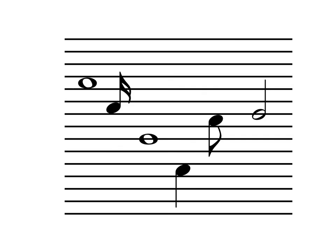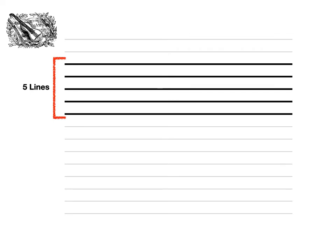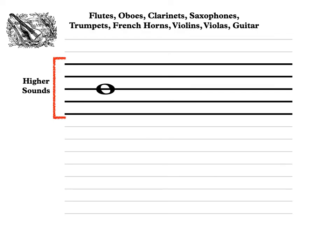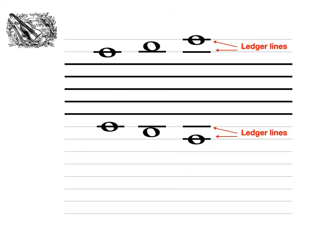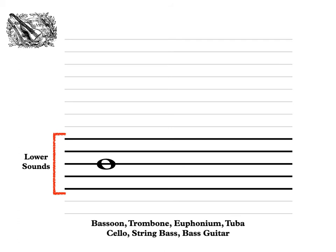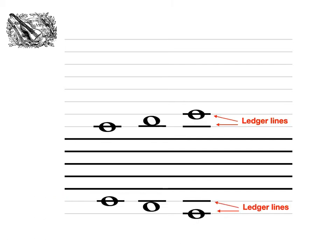But if we used all of the lines at one time, it would be just too confusing for the musicians. So we're going to reduce them down to just five visible lines at a time. If we needed higher sounds, we would use five lines higher up. If we needed to go beyond the five lines, we would bring out those invisible lines and use part of them — we call those ledger lines. Similarly for lower sounds, we use five lines down lower, and if we need to go beyond those, we use ledger lines again.